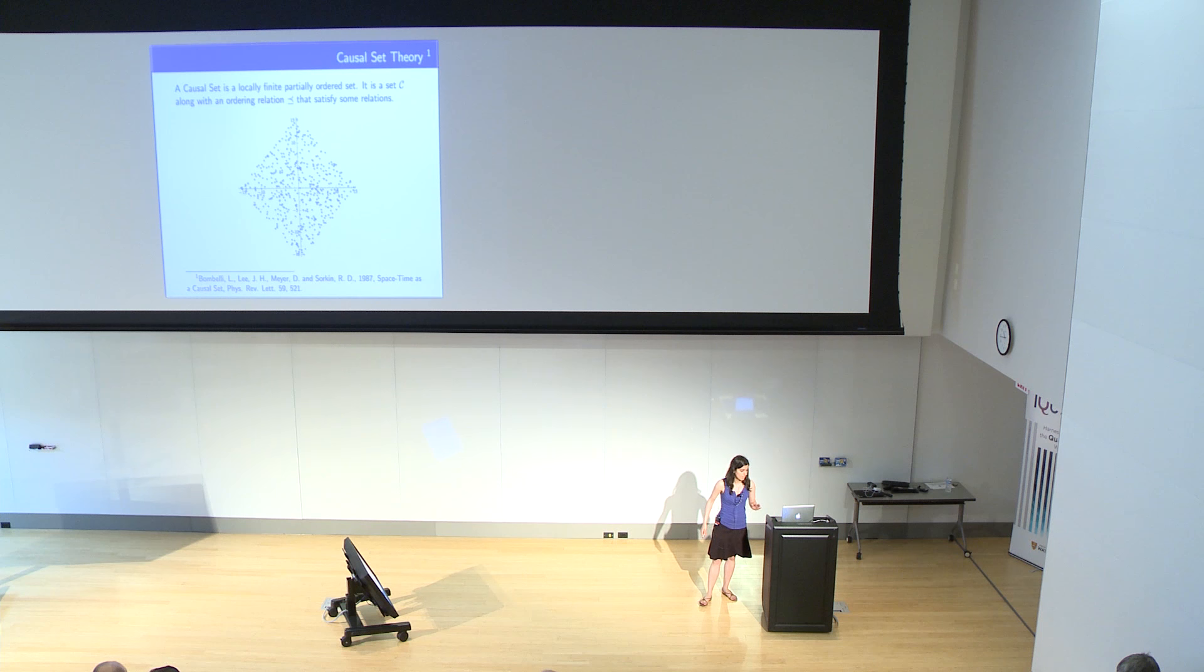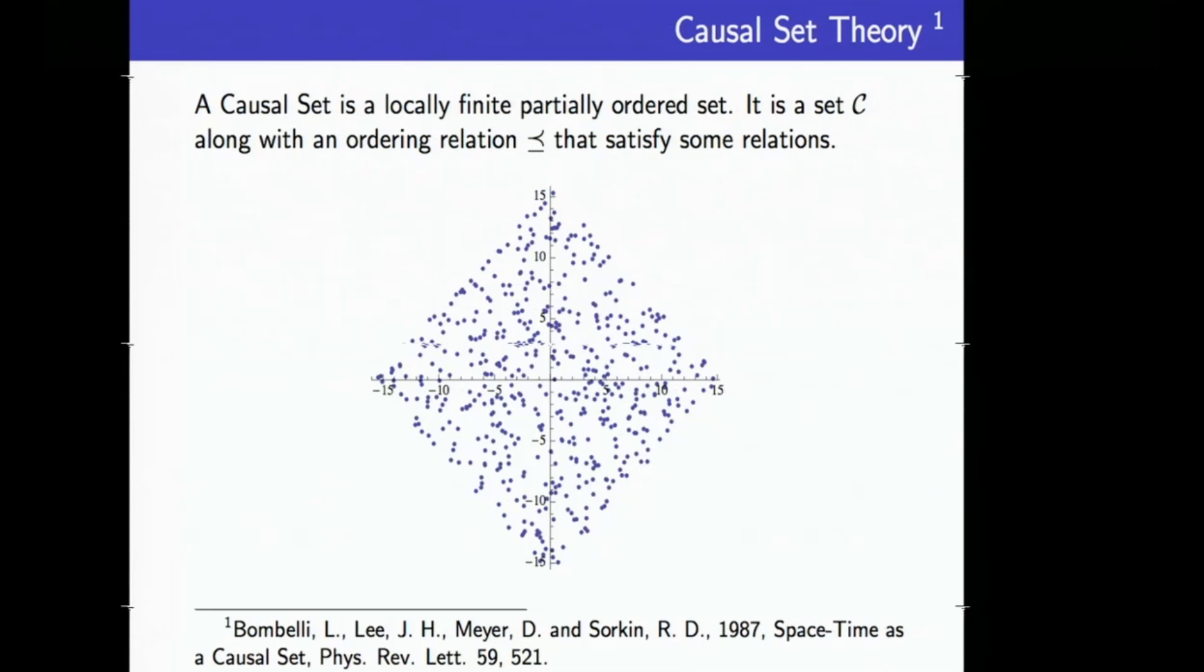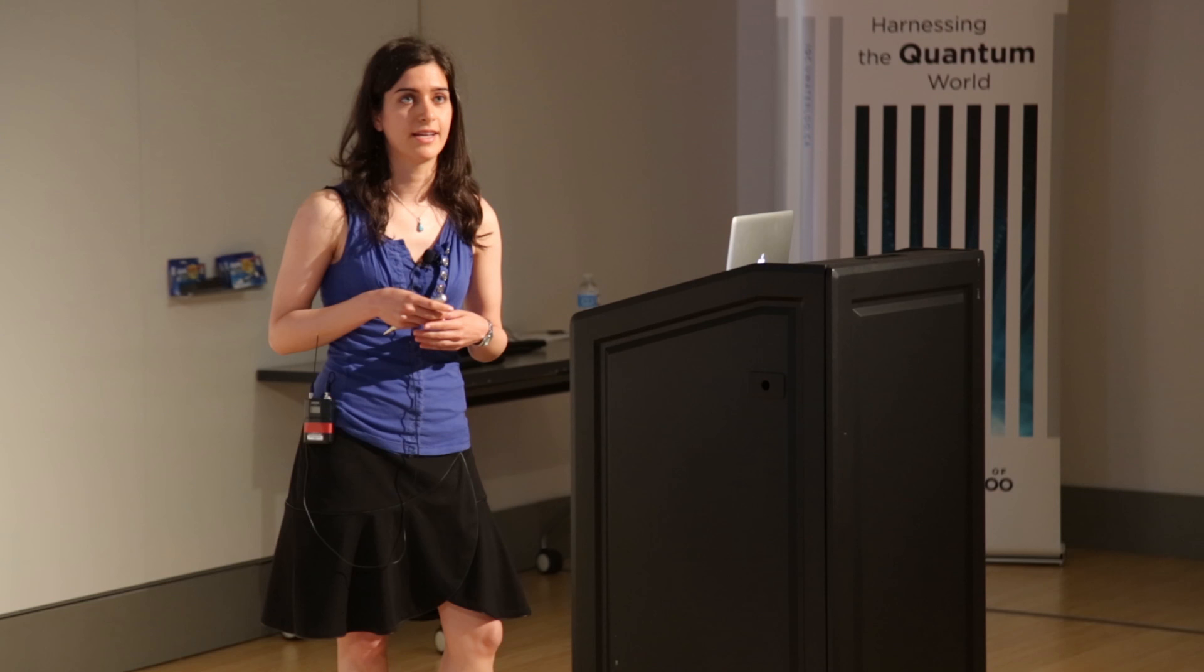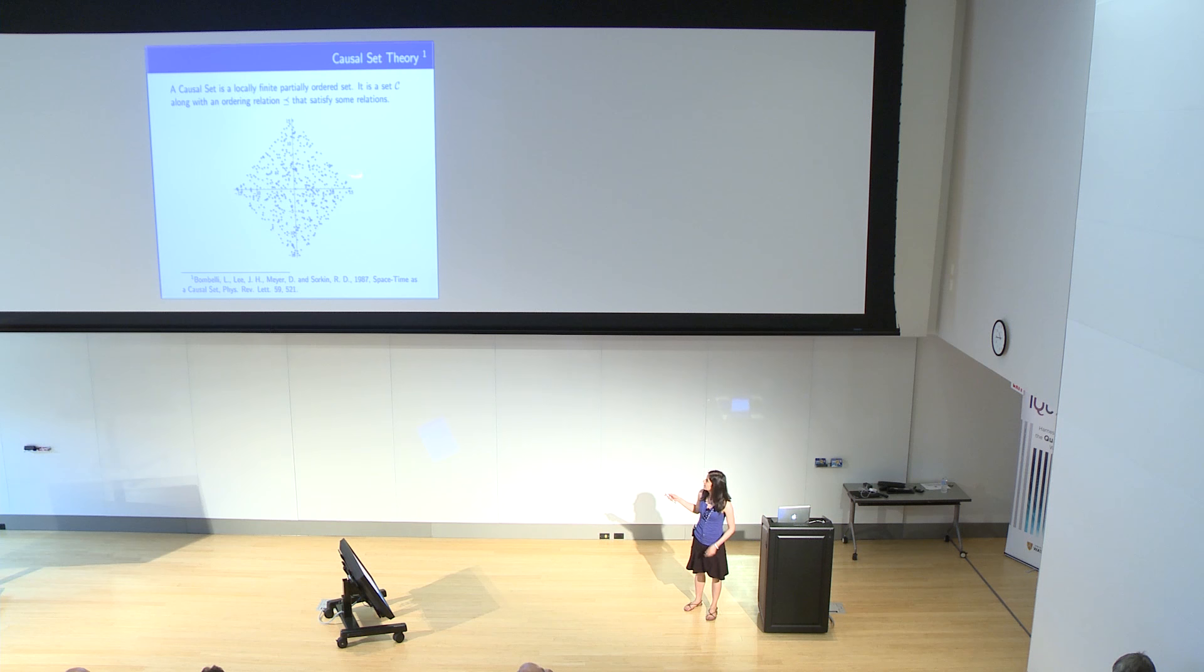Before I go on, let me very briefly say what a causal set is for those of you who are not familiar with it. Causal set theory is an approach to quantum gravity where the deep structure of spacetime is discrete. Formally, the causal set is a locally finite partially ordered set. The set is the set of spacetime elements, and the ordering relation is the causal relations among those elements. This is what a typical causal set looks like, whose continuum counterpart would be a causal diamond or interval in 1+1 dimensional Minkowski spacetime.